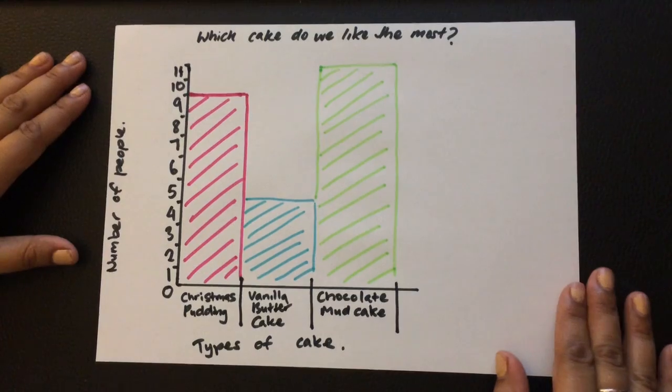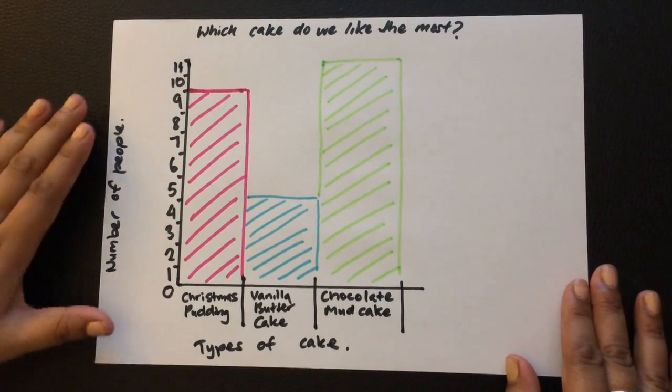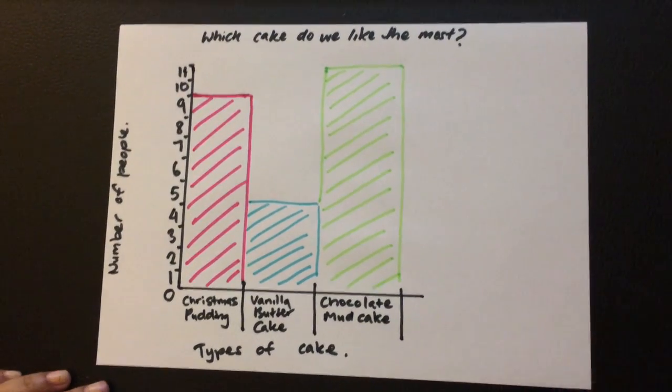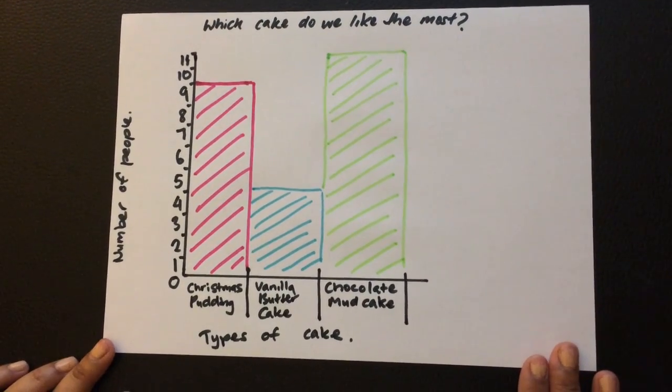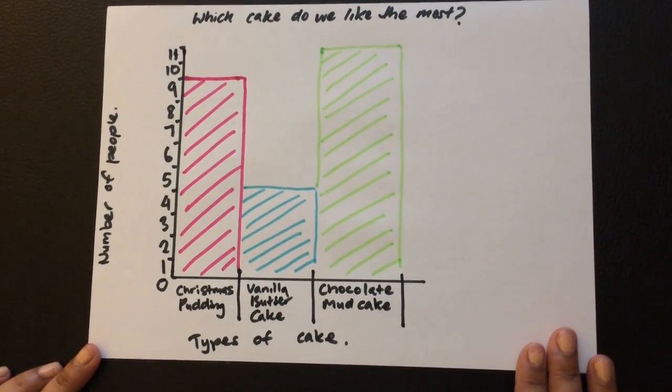Now the reason why we do this is if someone that doesn't know what we are doing asks us which cake do we like the most, we can give them this bar graph and they can see straight away that the chocolate mud cake is the most popular cake.